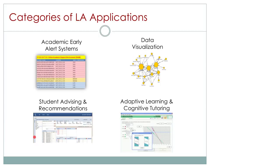Another area is student advising and recommendation systems — using analytics to help advise students on what courses to take next in their program sequence, and what services are available to them. Particularly for adult learners, the ability to match a student with services like child care while they're in class is very powerful. One of the groups working in the community right now is the Student Success Plan, which is an open source version of that kind of tool.